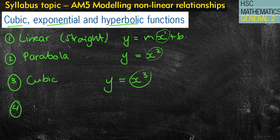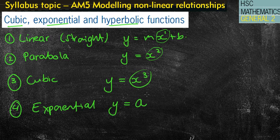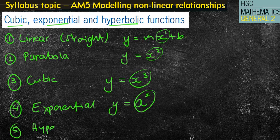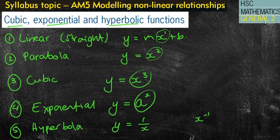Our exponential — when we first introduced powers like squares and cubes and the power of one, they are what we call exponents. So an exponential graph is where x is the actual exponent — it is the power — so it's y equals something to the power of x. And a hyperbola, which you may have done back in year 10, is where we have it as a fraction: 1 over x. That's the same as x to the negative one. If x is the denominator of a fraction, that's what we refer to as a hyperbola.